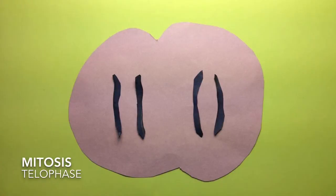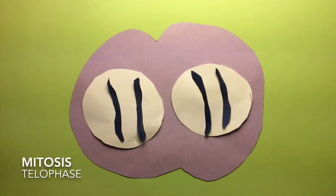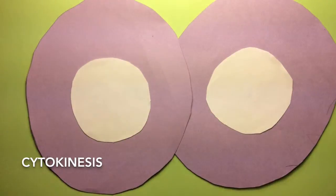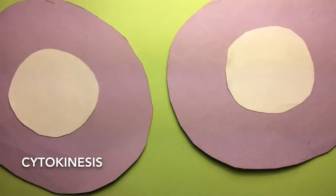In telophase, the nuclear membrane forms around the chromosomes. In cytokinesis, the cells finally split into two daughter cells.